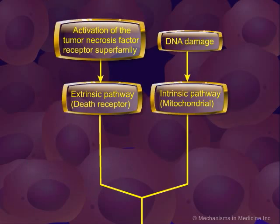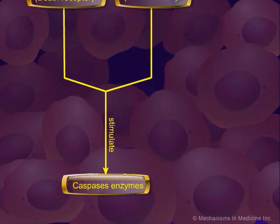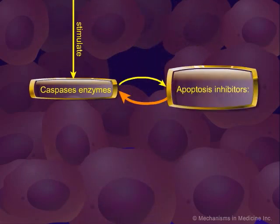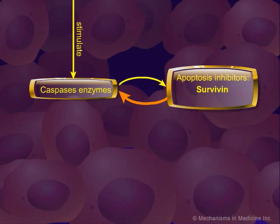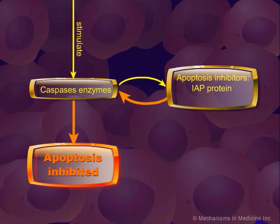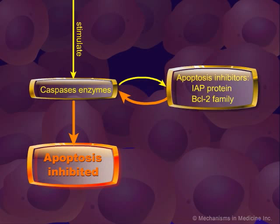In some malignant cells, there is resistance to apoptosis due to overexpression of anti-apoptotic proteins. For example, survivin is an IAP that is found in many cancers and predicts for poor outcomes, and BCL2 is overexpressed in B-cell lymphomas as a result of the translocation of its gene. Conversely, deactivating mutations of a pro-apoptotic molecule like Bax is seen in some gastrointestinal tumors and leukemias.